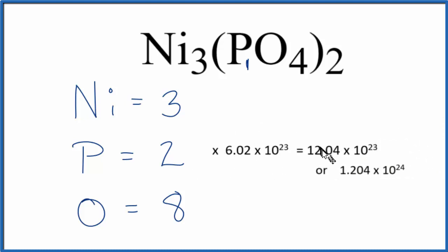That'll give you the number of phosphorus atoms in 1 mole of nickel 2 phosphate. This is Dr. B with the number of atoms in Ni3(PO4)2, and thanks for watching.